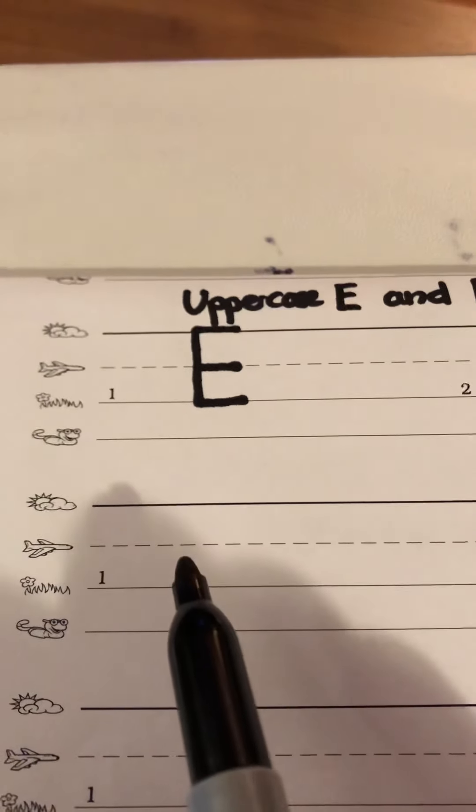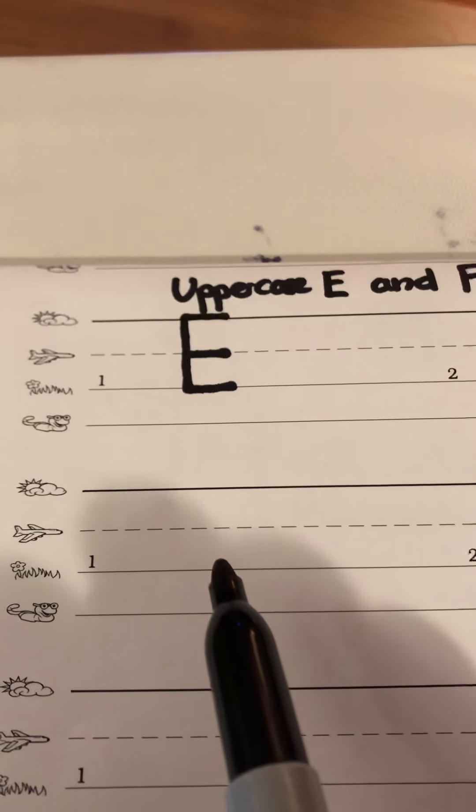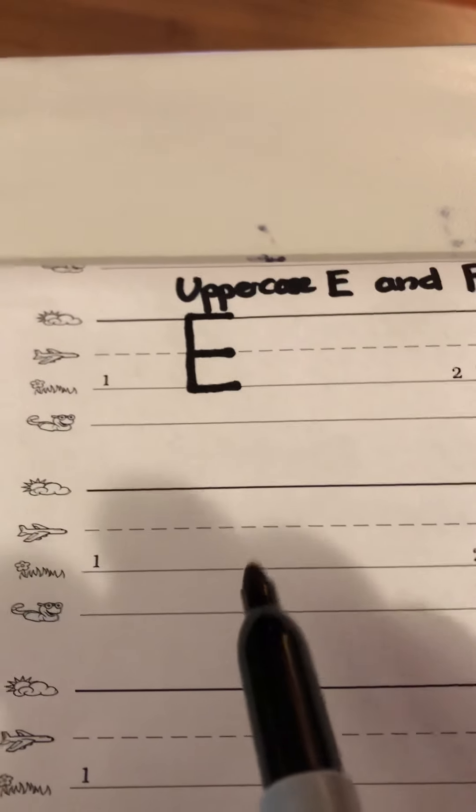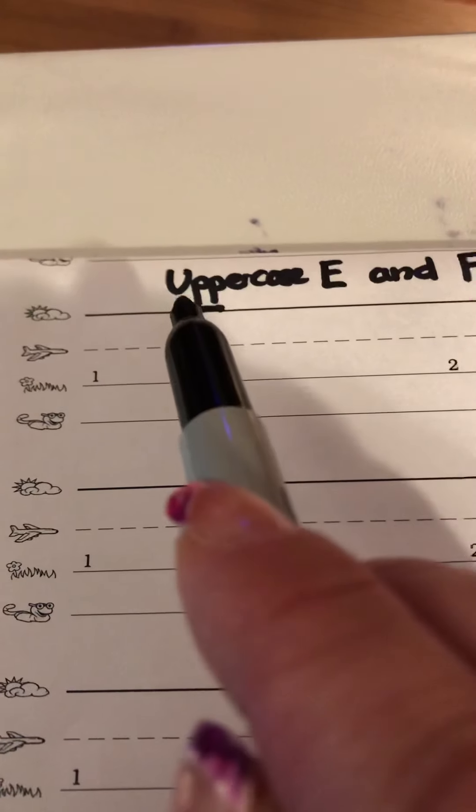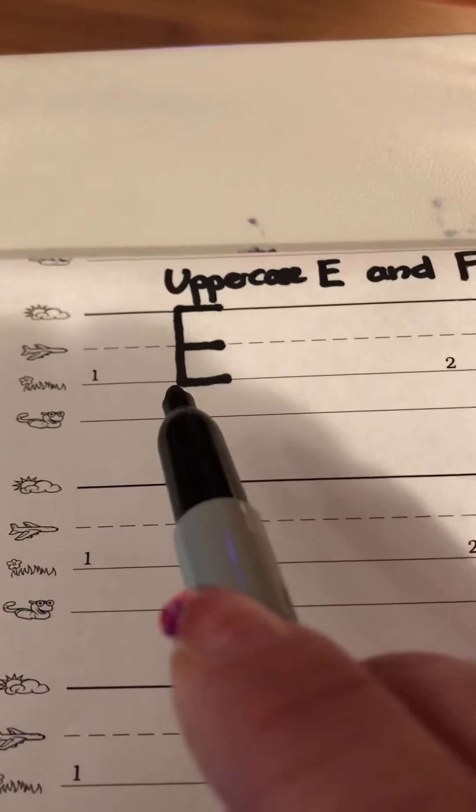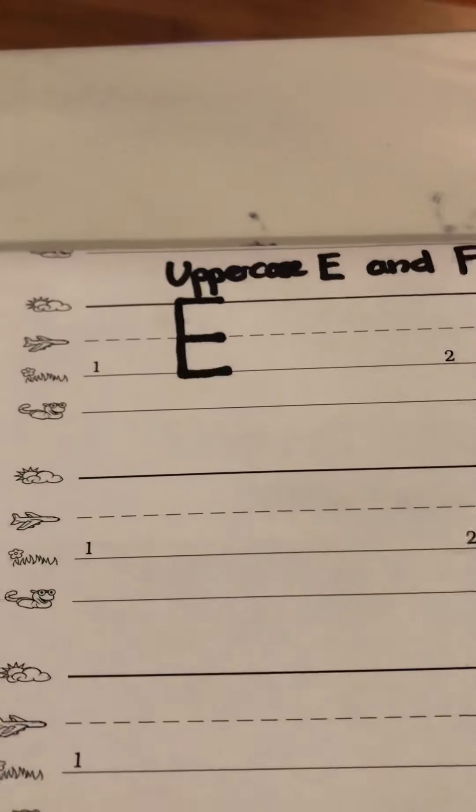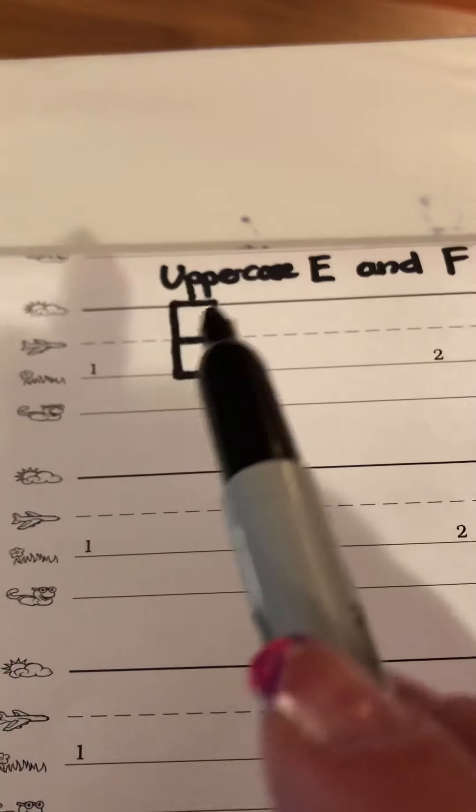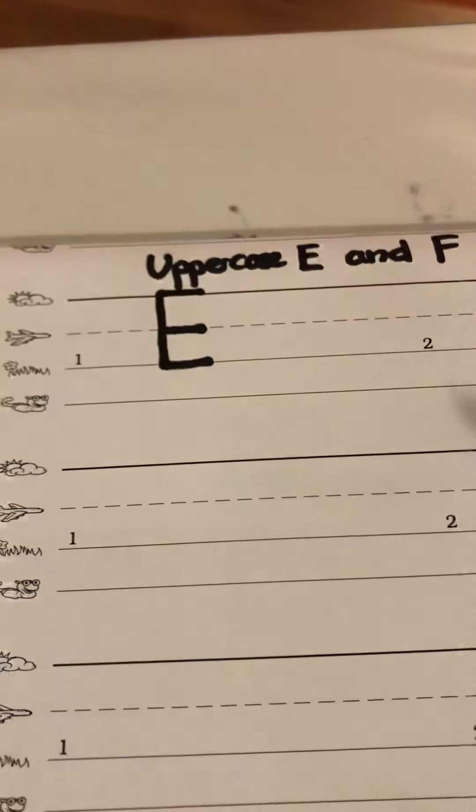E represents the first sound you hear at the beginning of the name Ed. Say E, Ed, E. You say that with me. E, Ed, E. Good.